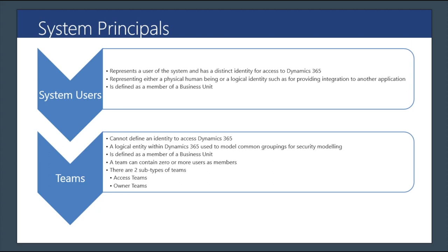Dynamics 365 introduced two types of teams: access teams and owner teams. Access teams cannot own any record — this is the main difference between access teams and owner teams. Access teams also don't have assigned security roles. Owner teams, on the other hand, can own records and can have assigned security roles. We will talk about this more on another slide.